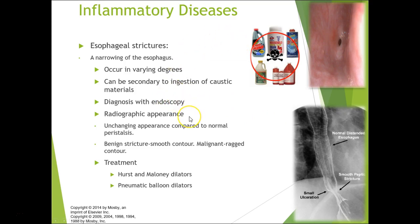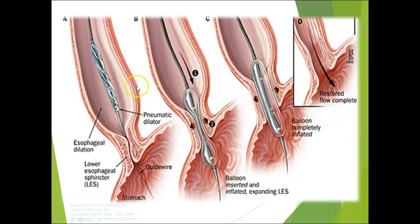Esophageal strictures are a narrowing of the esophagus in varying degrees, sometimes secondary to ingestion of caustic agents. Diagnosed with endoscope. Benign stricture has a smooth contour; malignant stricture has an irregular, ragged contour. You can see here how narrow the lumen is. Treatment involves balloon dilation during endoscopy to dilate the cardiac sphincter or wherever the stricture is located.